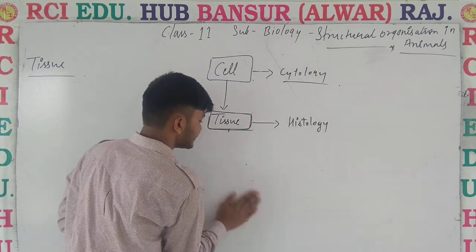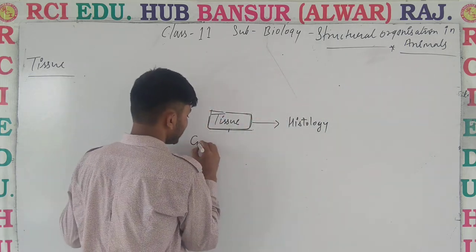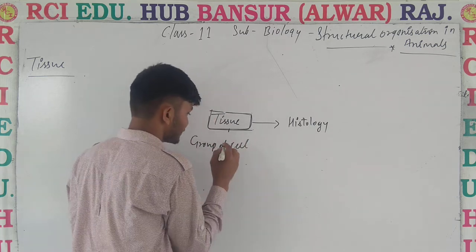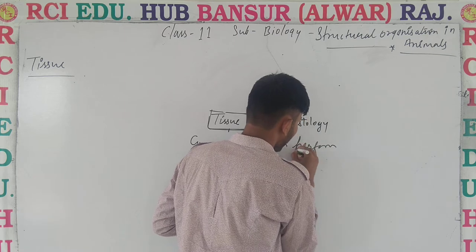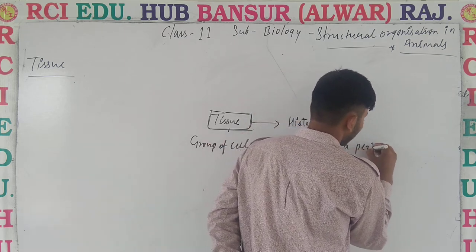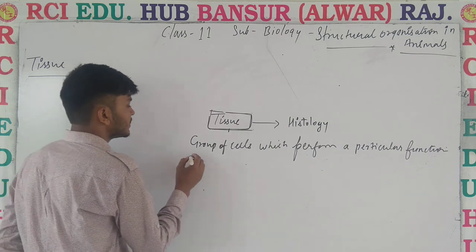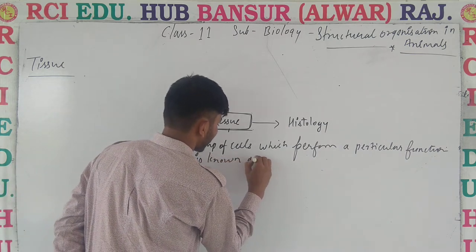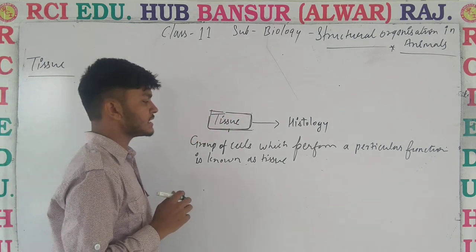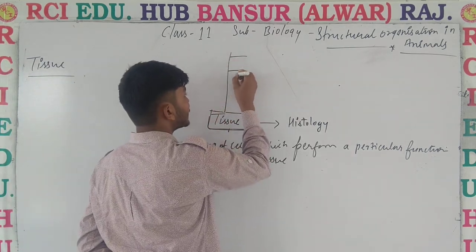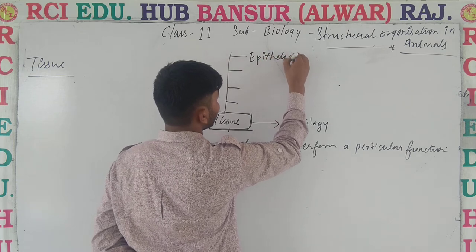A group of cells which perform a particular function is known as tissue. The study of tissue is known as histology. There are basically four kinds of tissues. Number one is epithelial tissue.